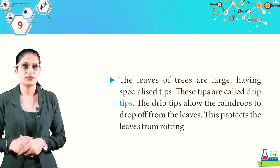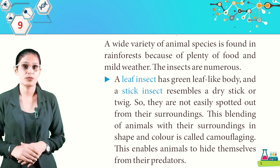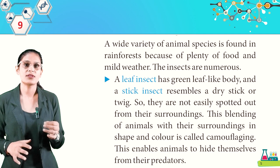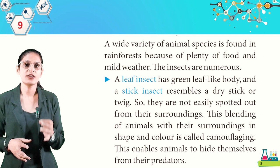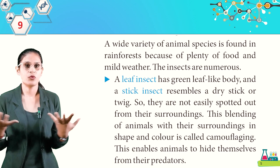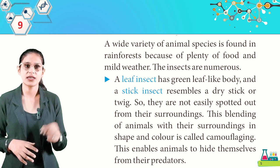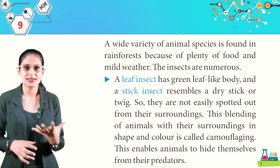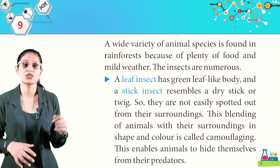A wide variety of animal species is found in rainforests due to plenty of food and mild weather. A leaf insect has a green leaf-like body, and a stick insect resembles a dry stick or twig, so they are not easily spotted. This blending of animals with their surroundings in shape and color is called camouflage, which enables animals to hide from their predators.